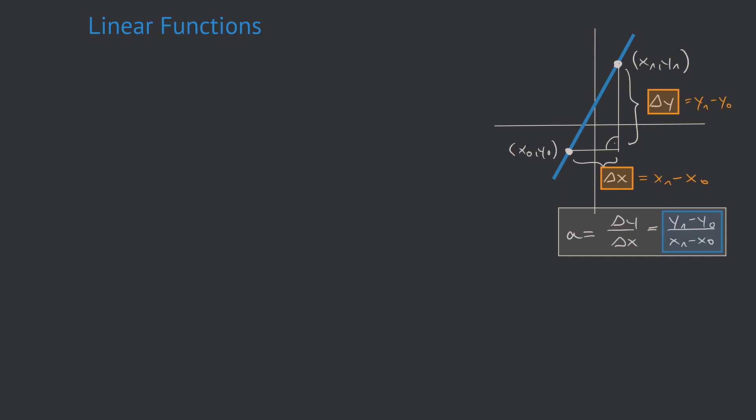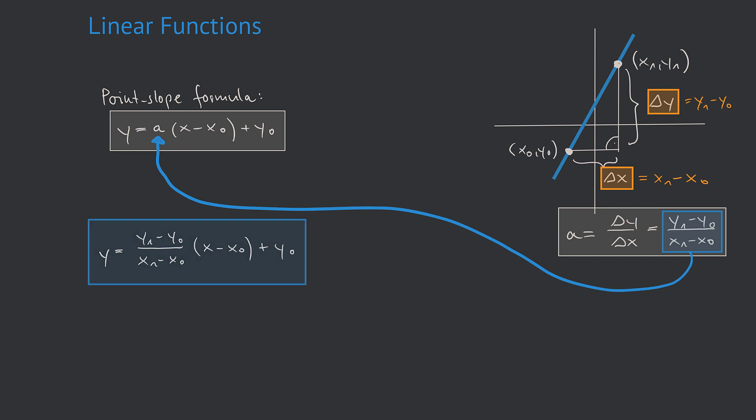Now remember the point-slope formula we just figured out before. We can use it in our situation by simply plugging in the formula for a, which we have just calculated, for a here in the formula. Altogether, we get y equals, and now I plug in the expression for a, which is y1 minus y0 divided by x1 minus x0 times x minus x0 plus y0. And we are done. That is the so-called point-point formula for a line when we are given two points which the line should pass through.